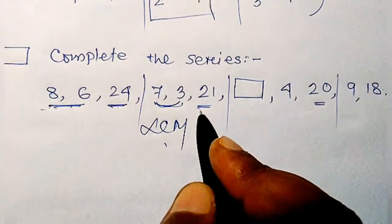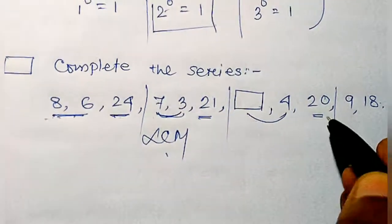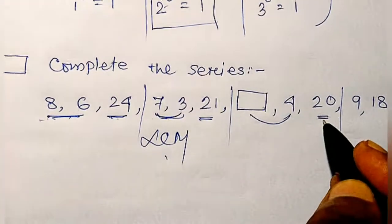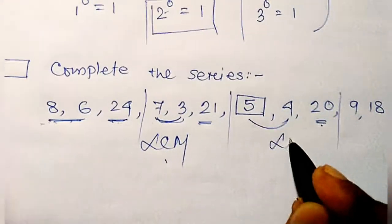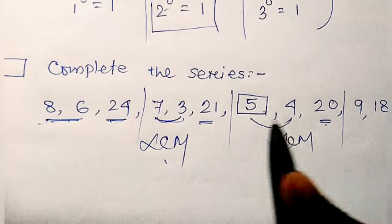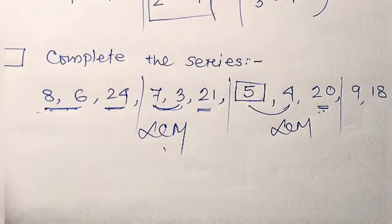And if you take the LCM of dash and 4, then you will get 20. So obviously the number should be 5, because the LCM of 5 and 4 should be 20. So the answer is 5.